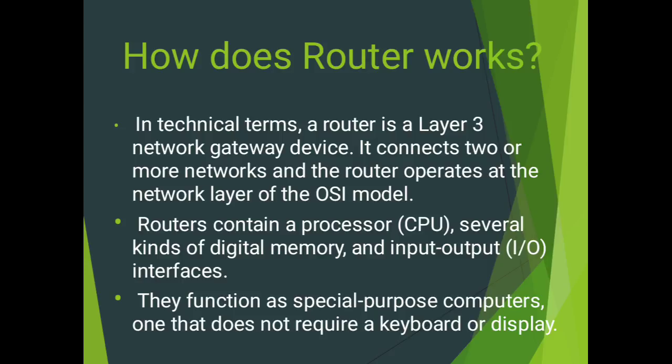Our next topic covers the working of a router. When multiple routers are used in interconnected networks, the router can exchange information about destination addresses using a routing protocol. Each router builds up a routing table listing the preferred routes between any two systems on the interconnected networks.